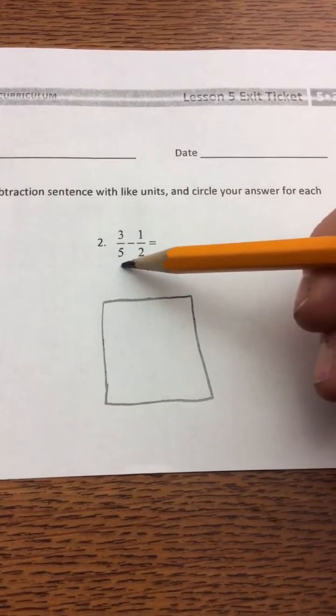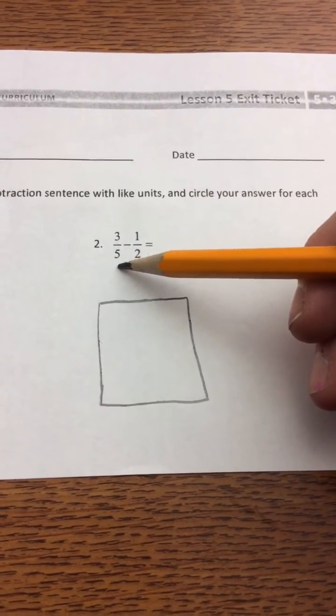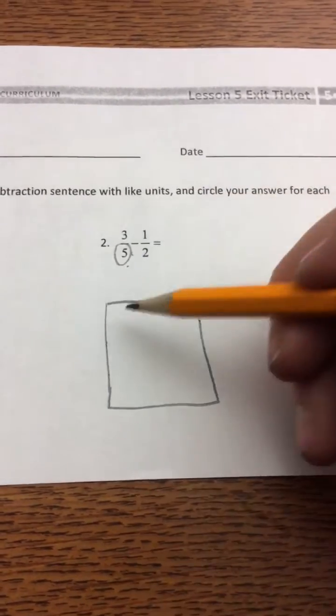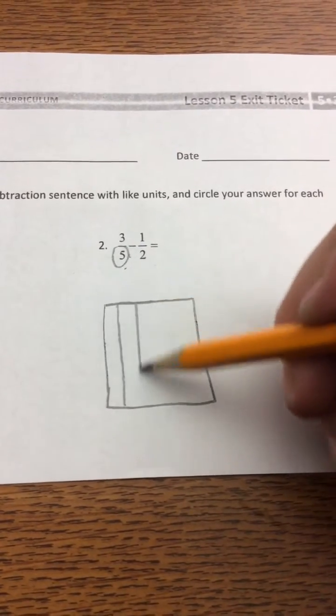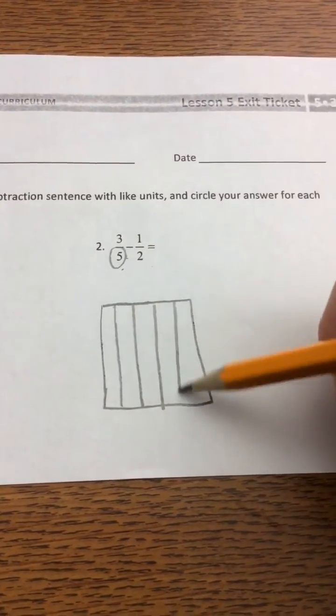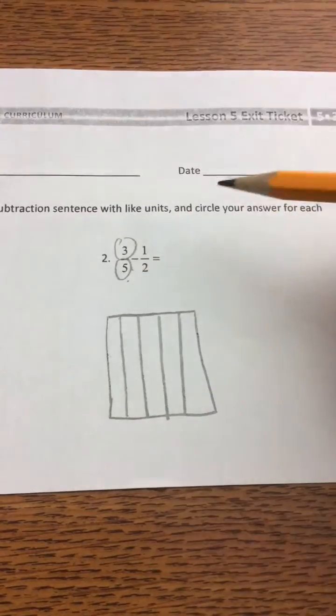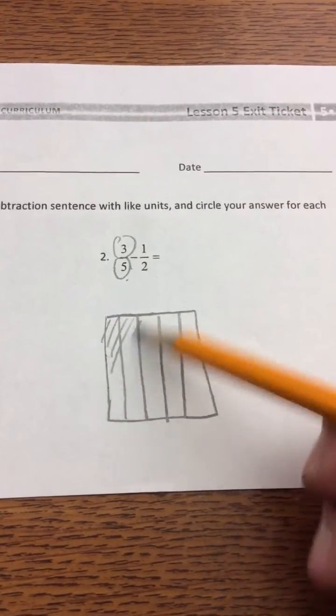We'll look at our first fraction, 3/5, and look at the denominator. The denominator says 5, which tells us to split our area model into 5 pieces. Our numerator says 3, which tells us to shade 3 of those.